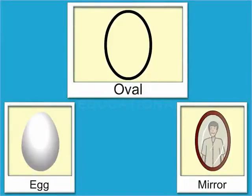Now, children, look at this egg and this mirror. Can you tell what shape they have? They have an oval shape.